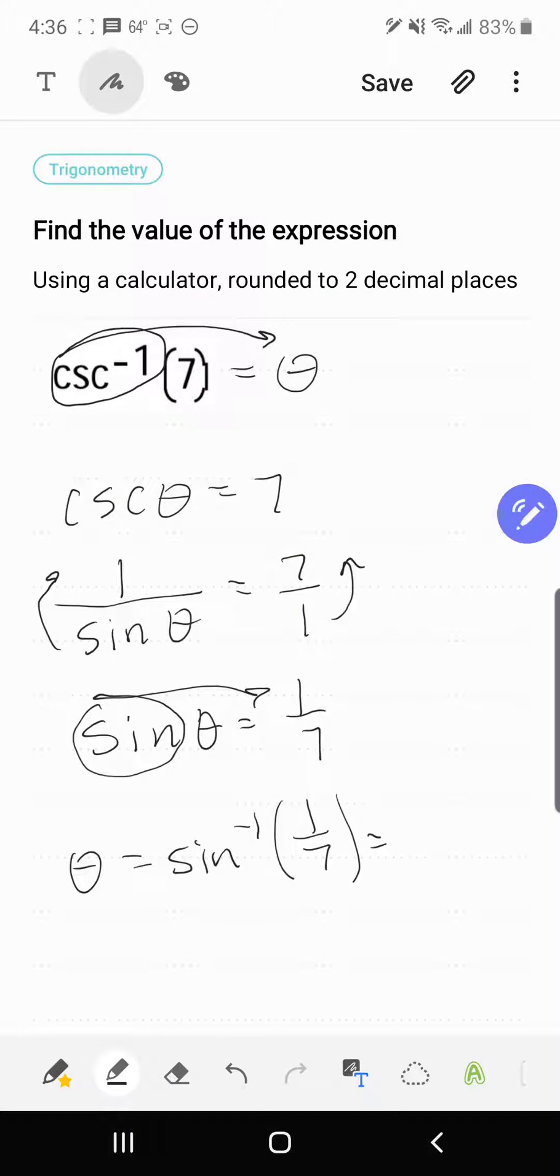And so we can go back and we can say theta is 8.21 degrees, and that is rounded correctly to two decimal places.